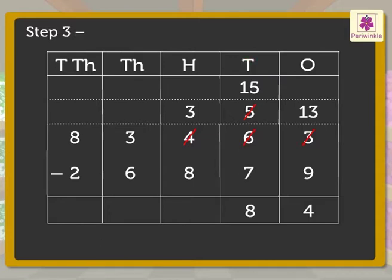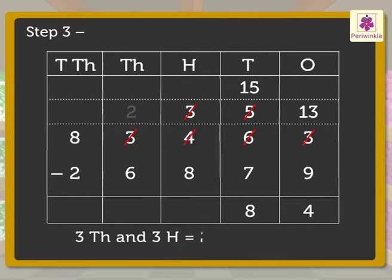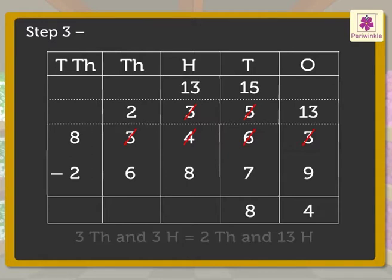Step 3: Subtract the digits in the hundreds column. Here, as the hundreds are not enough, we regroup the thousands. That is, 3 thousands and 3 hundreds is equal to 2 thousands and 13 hundreds. Therefore, 13 minus 8 is equal to 5 hundreds.